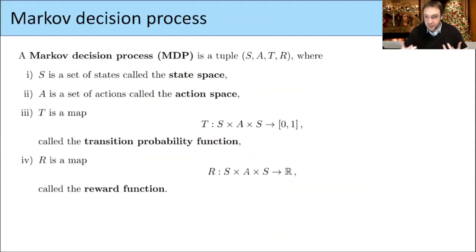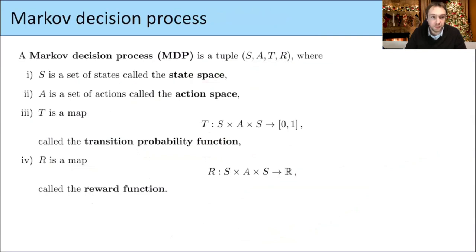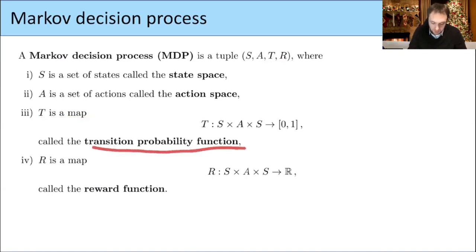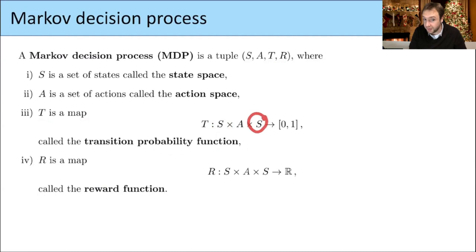This general setup is described by the Markov decision process, which consists of four things: a set S of states, a set A of actions, and two maps T and R. T is the transition probability function, which tells us the probability that if we are in some state S and take some action A, we will land in some state S'. The value of this function at these three inputs tells us the probability of going from one state to another by using action A.